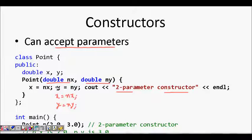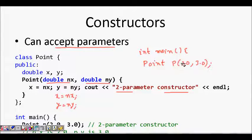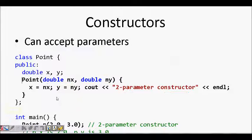In the main function, you can write 'Point p(2.0, 3.0)'. An instance of class Point named p will be created, and 2.0 and 3.0 are passed as arguments. The two-parameter constructor will be called, setting x to 2.0 and y to 3.0.